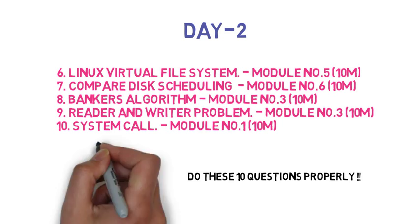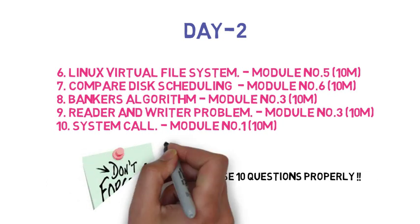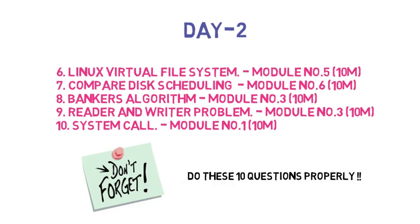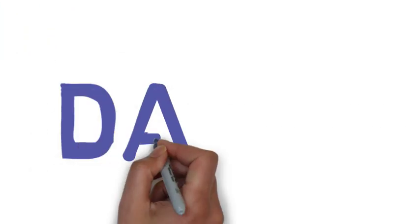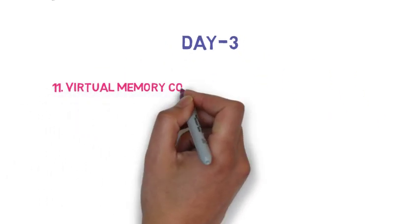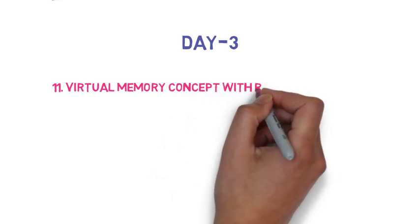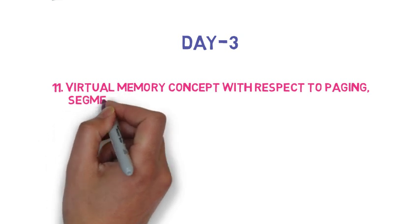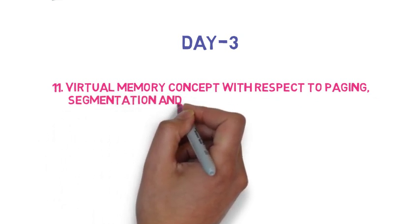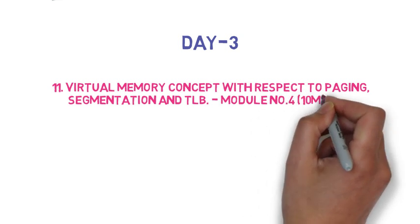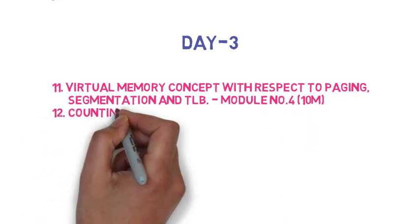We suggest you also study Day 3 and Day 4 to score better. For Day 3, the first question is: explain the virtual memory concept with respect to paging, segmentation, and TLB — this can come for 10 marks. The twelfth question is: explain counting semaphores with examples, also for 10 marks.